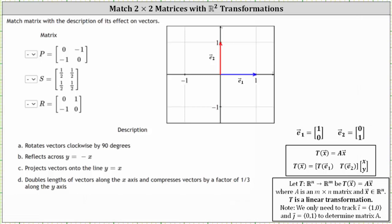We're asked to match each transformation matrix with the description of its effect on vectors. Because each matrix represents a linear transformation in R2, the first column of each matrix represents the transformation of the vector E sub one, or the vector (1, 0), and the second column represents the transformation of the vector E sub two, or the vector (0, 1). So let's go ahead and label the two columns.